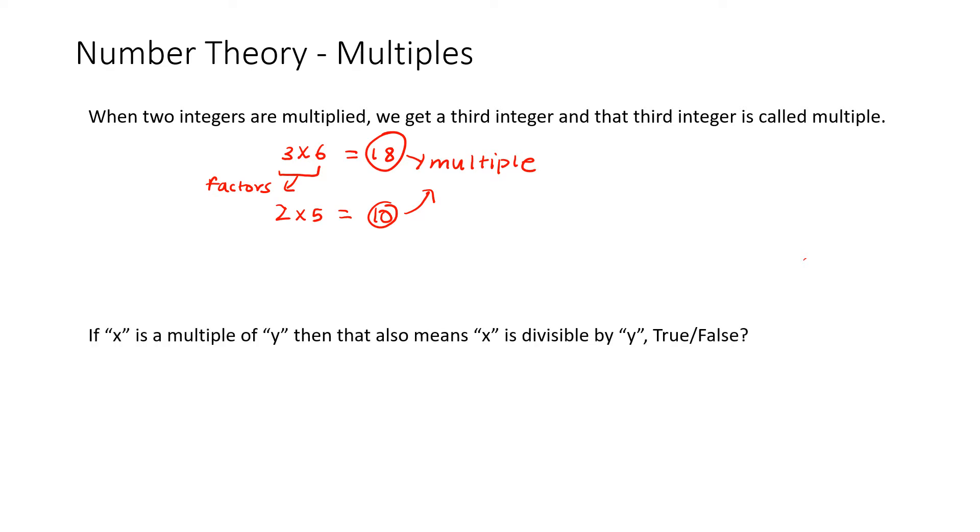Is 22 a multiple of 5? And the answer for this would be no, because we know that they aren't divisible. 22 divided by 5 gives us a decimal. What would be a multiple of 22? Well, 2 times 11 are factors of 22, and 22 is our multiple. Now let's try this question.